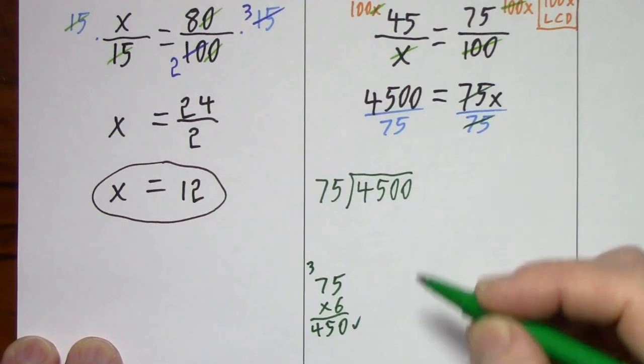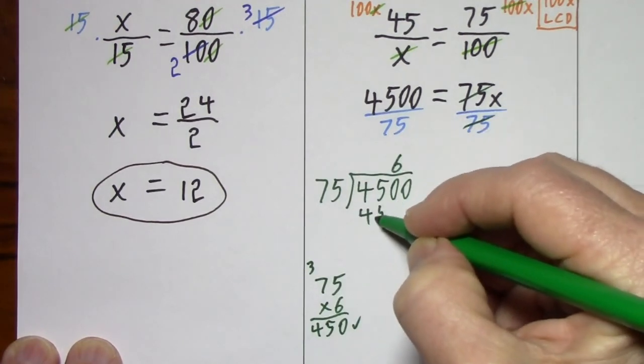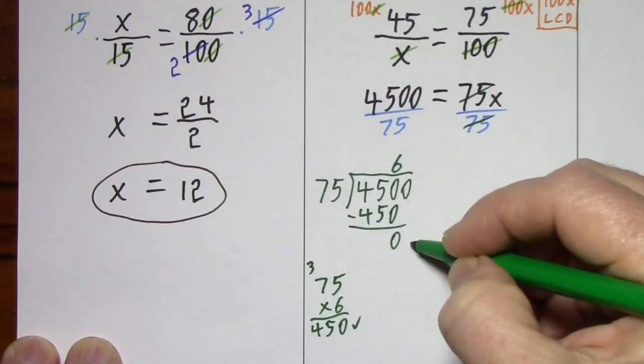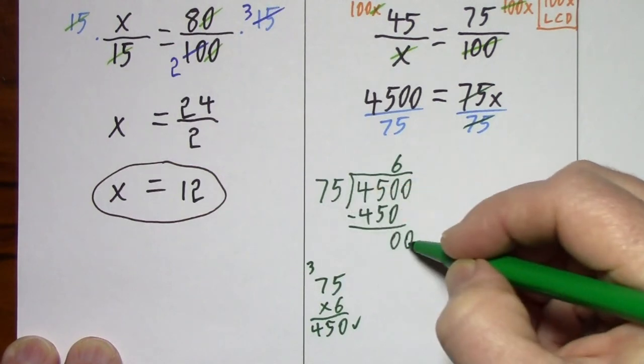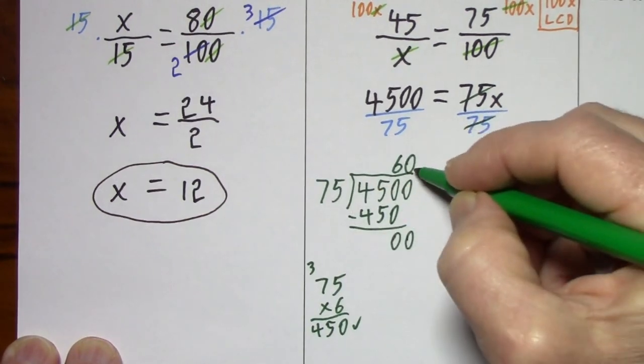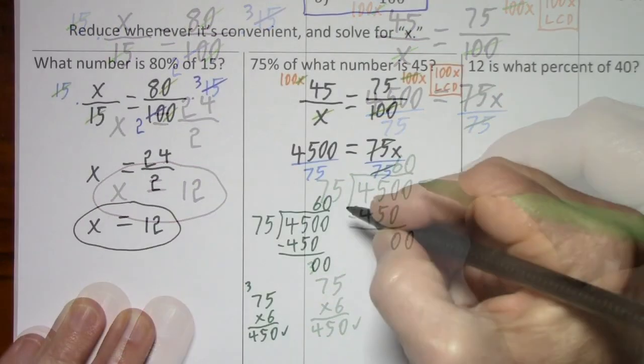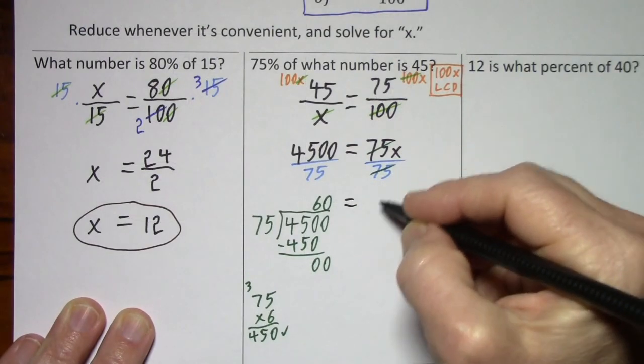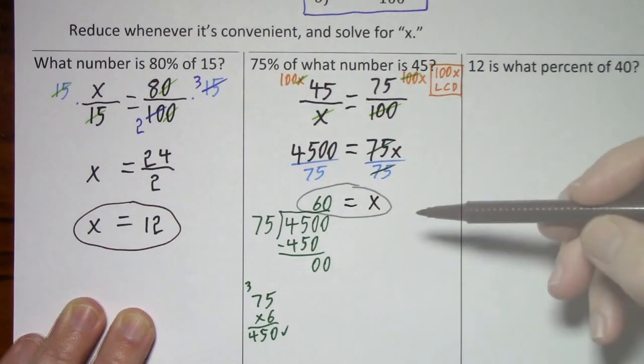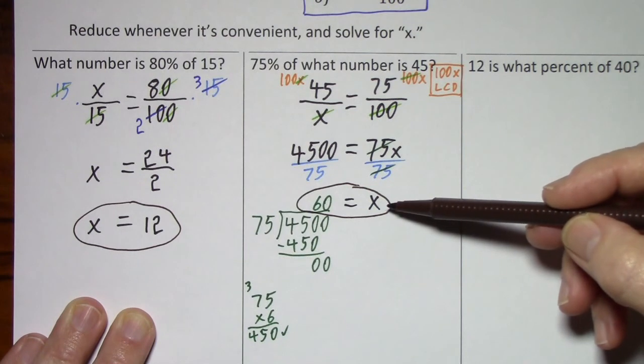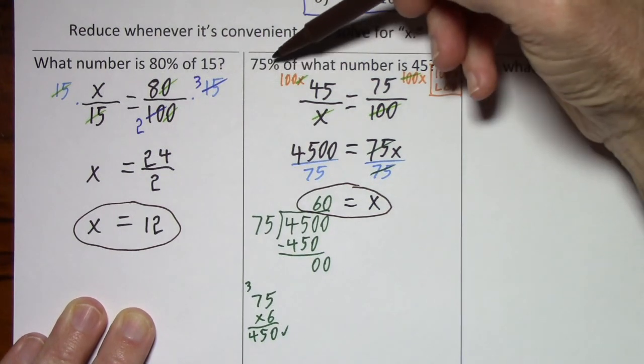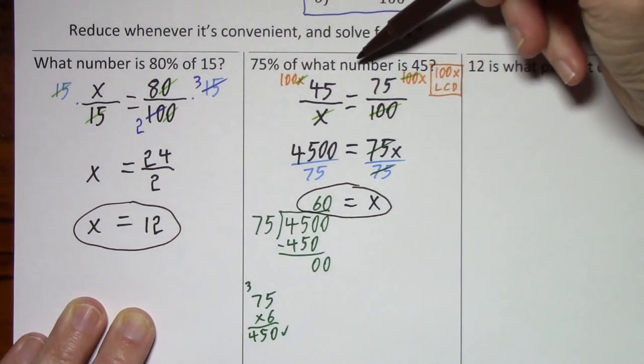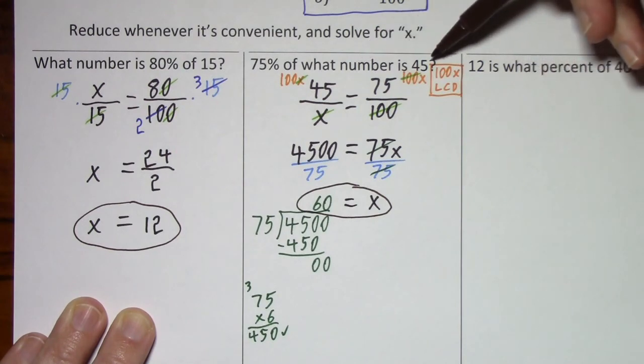42, 45. So that gave us the 450. You have to bring down that last zero. 75 goes into zero. Zero times. Bring down your equal sign, and that X. So what this says is that 75% of 60 is 45.